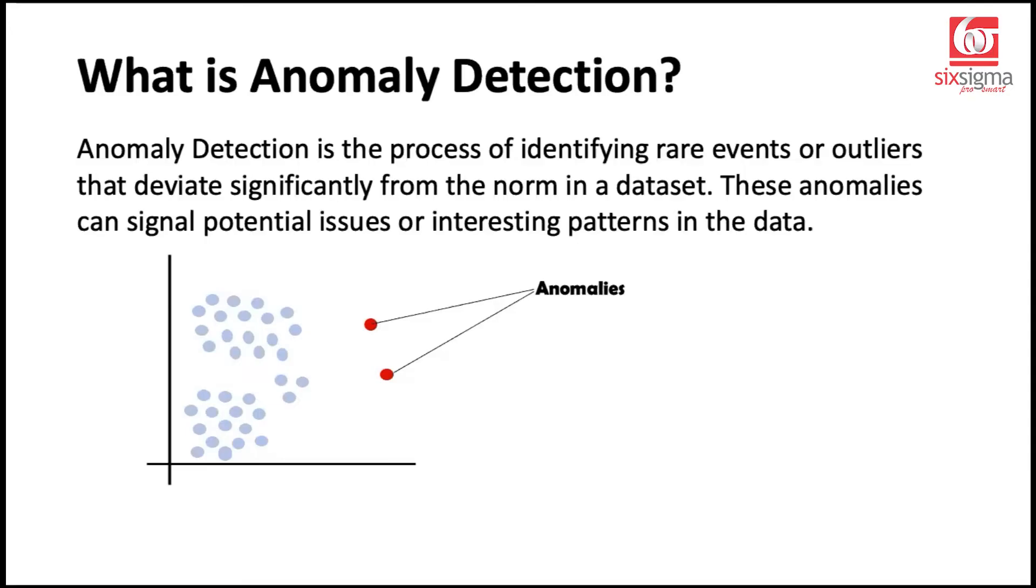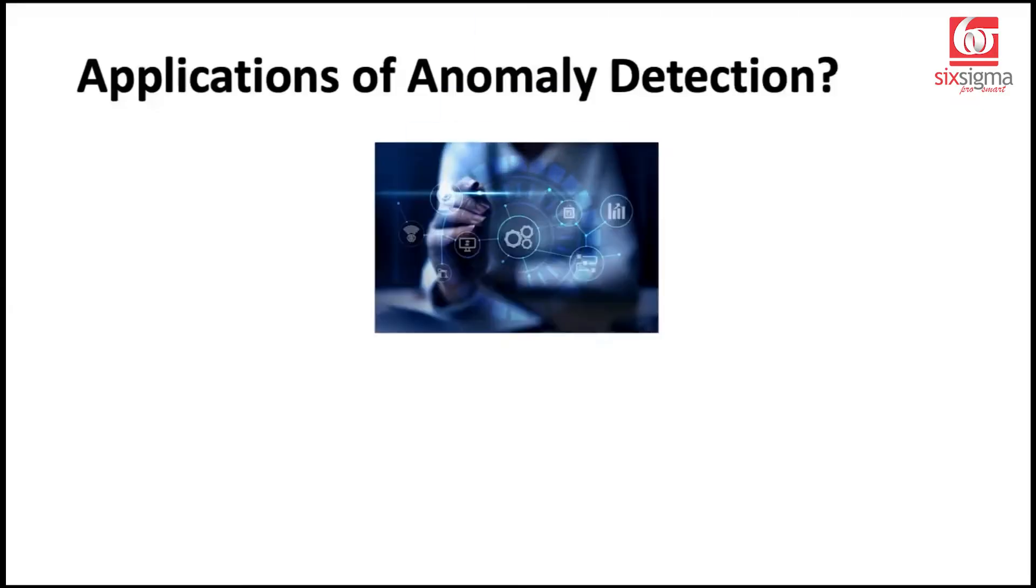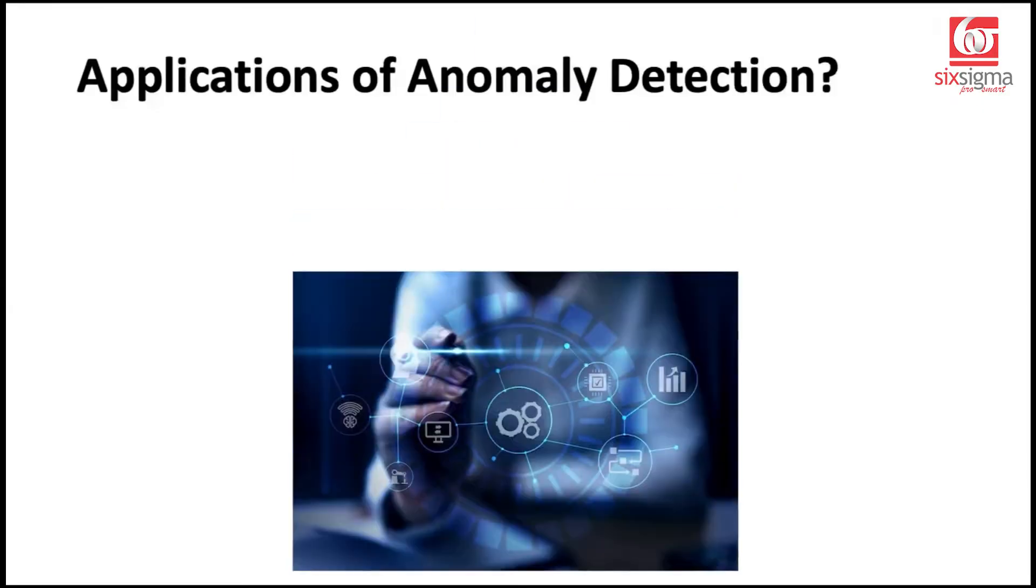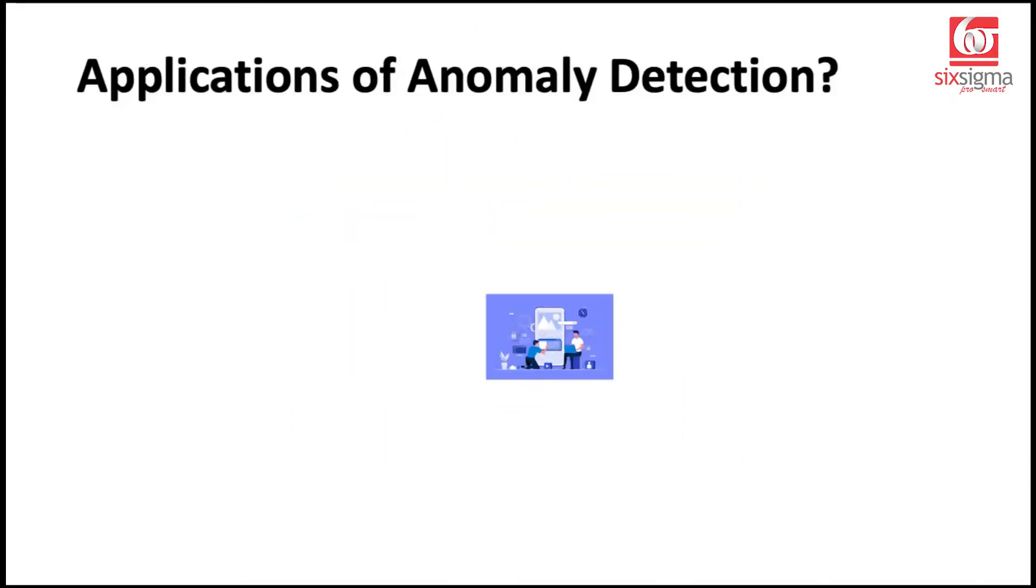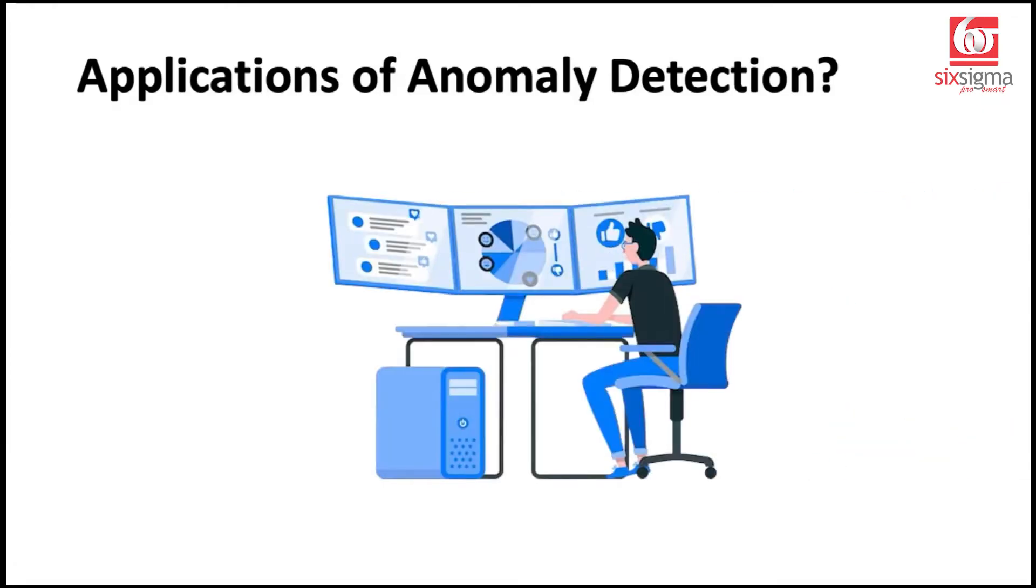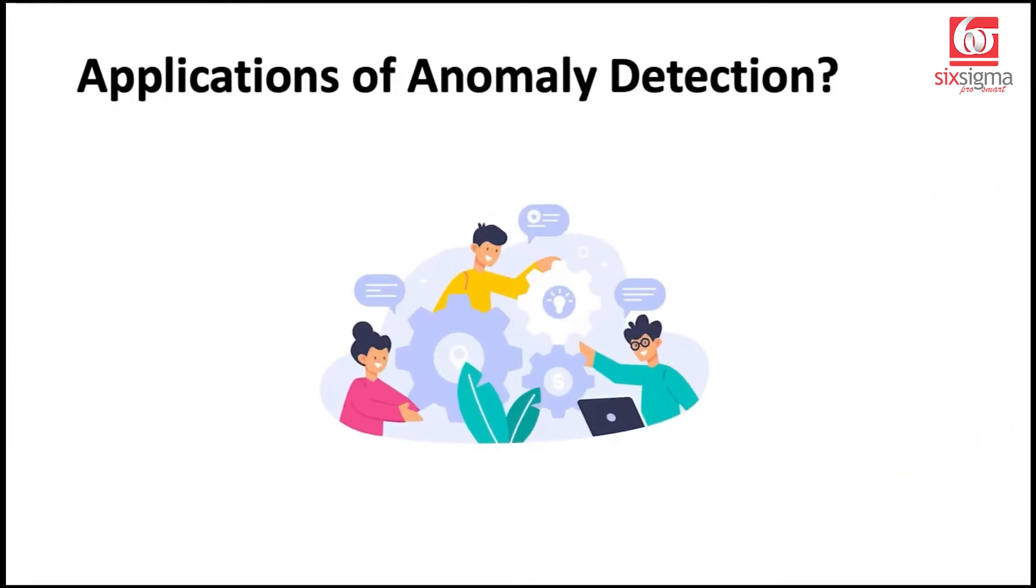The limitation, however, would be that we cannot visualize a multi-dimensional data. Our visualization would always be limited to one or two dimensions. So is there a way that we can actually find out outliers or unusual values in the data without necessarily visualizing it? That's what we're going to focus on in the subsequent slides. Now before we get into the technicality of things, let's understand where all it is applicable because it's something which is widely used and nowadays it's very commonly needed.